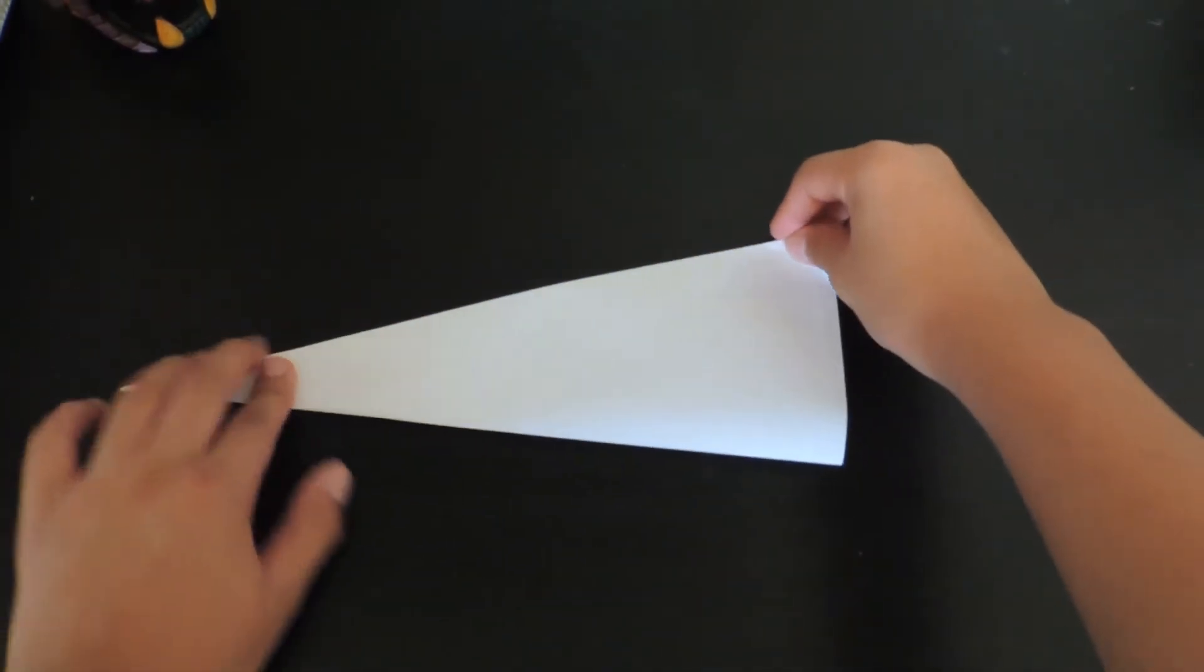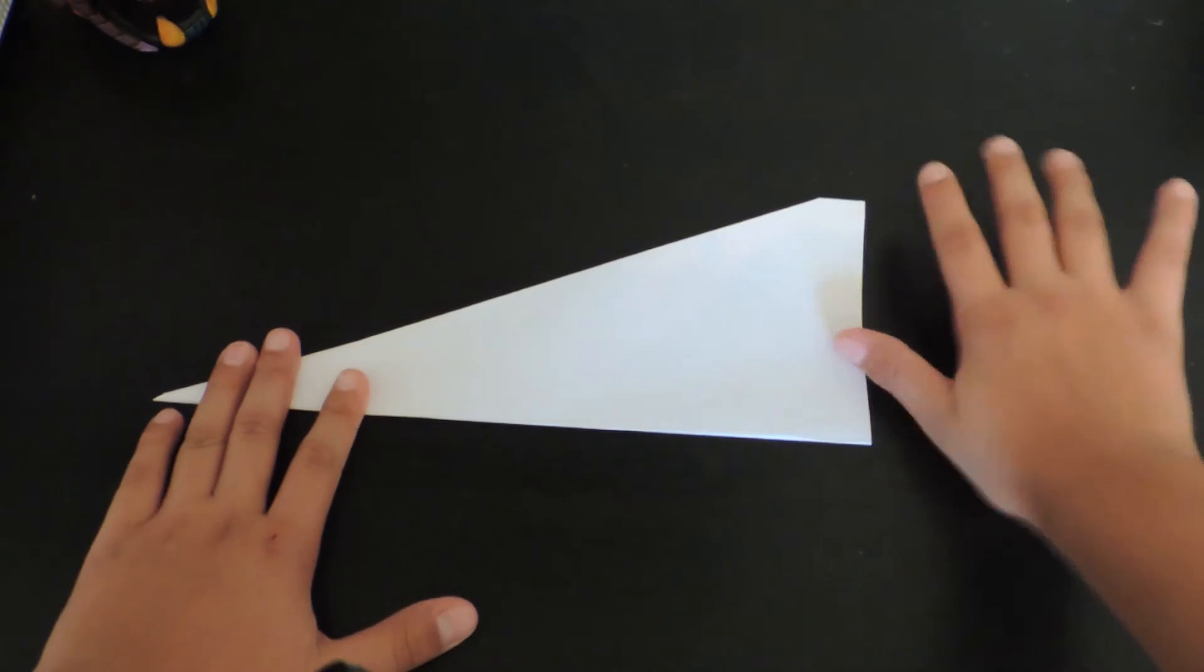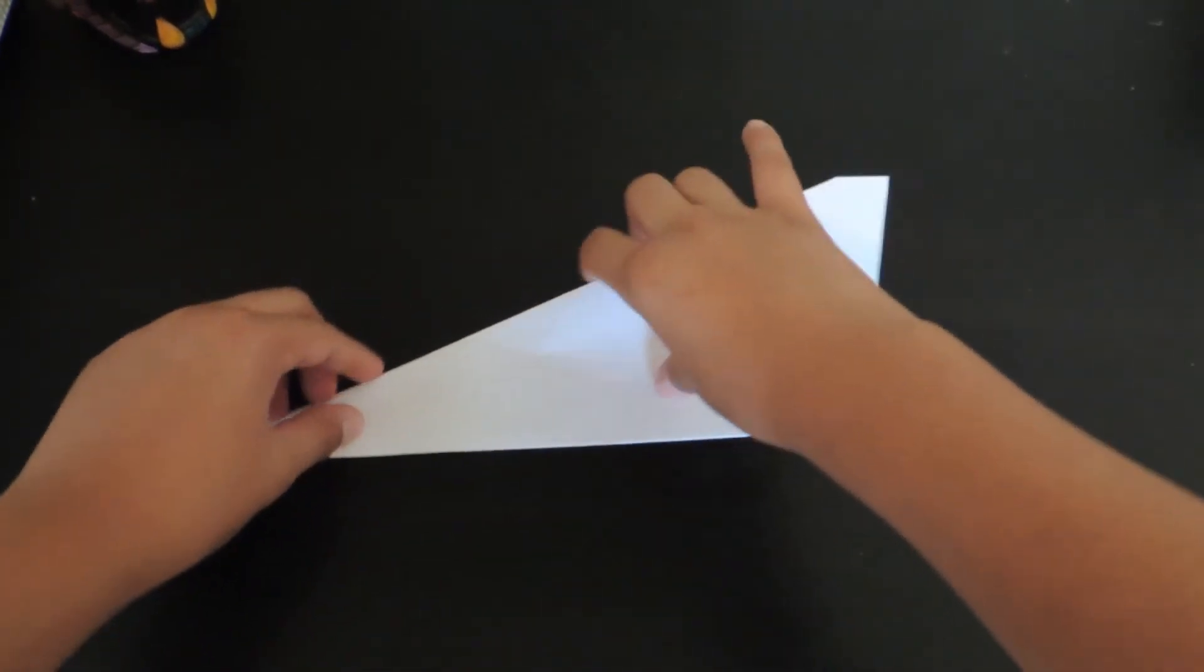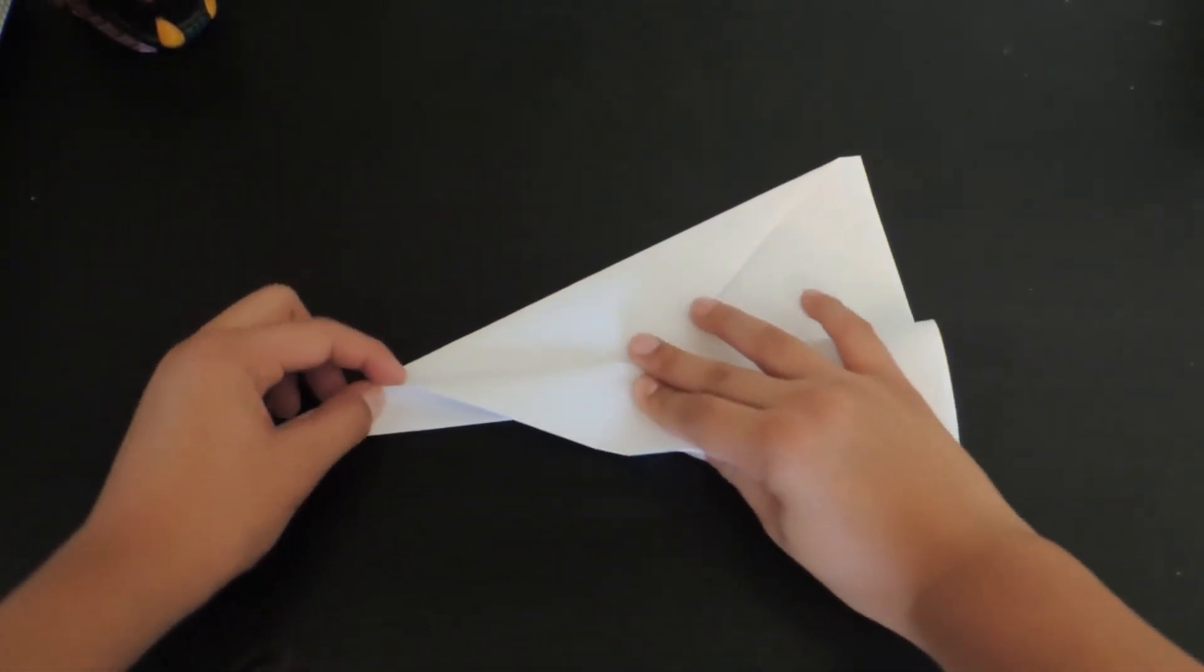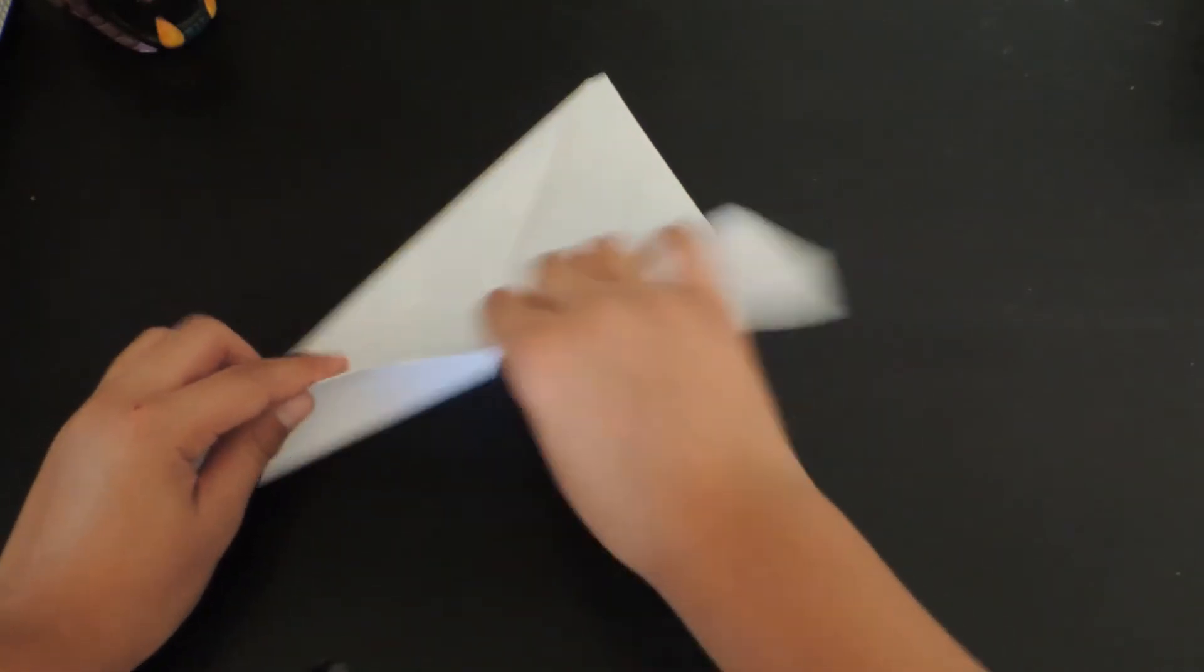So now you're going to fold it. Now this is kind of the hard part. To fold the wings perfect. So you kind of want the wing over this, over like this little edge right here.